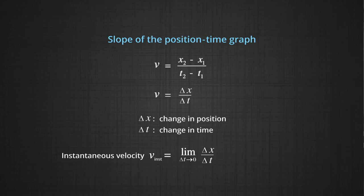Car speedometers measure this instantaneous velocity, although the measurement must be done over a short time interval. For example, the speed of light involves a very large Δx in one second, so Δx tending toward 0 does not imply velocity is 0. In calculus notation, this is written as dx/dt — summing displacements over very small time intervals to find velocity at any instant.